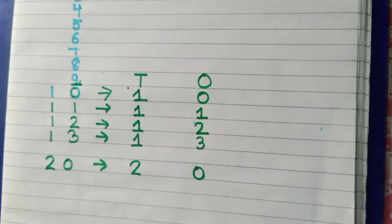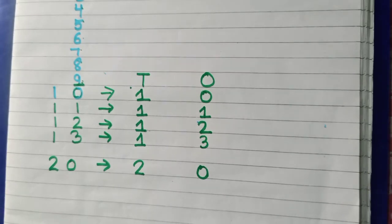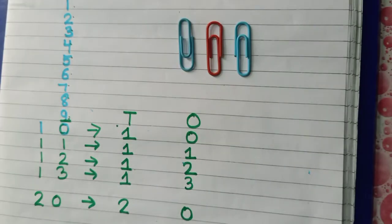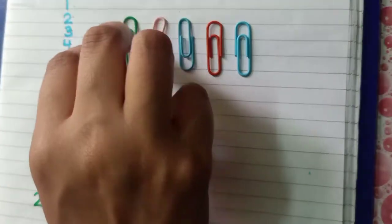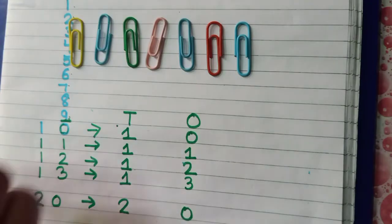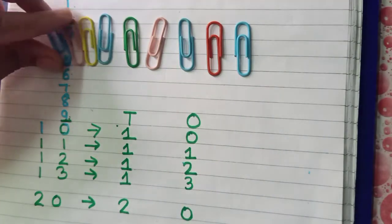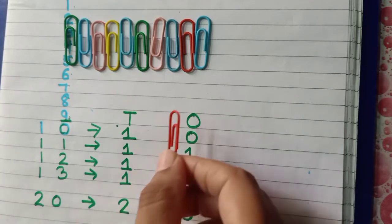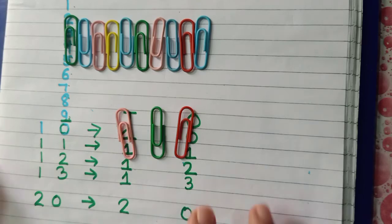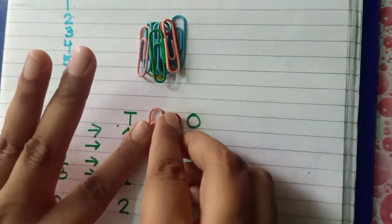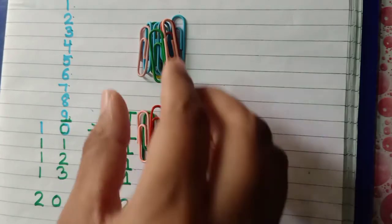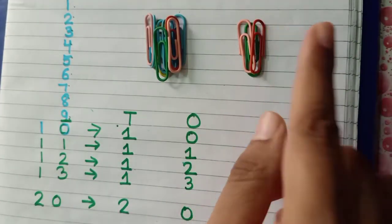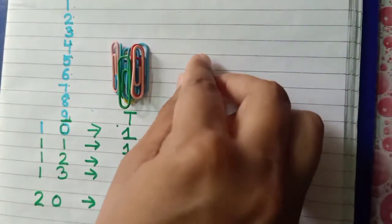Now I will take ten paperclips — 1, 2, 3, 4, 5, 6, 7, 8, 9 and 10. I will add three more: one, two, three. Now this is a bundle of ten and three — total paperclips are thirteen. So bundle of ten means one tens and three ones. We will put one on tens place and three on ones place.